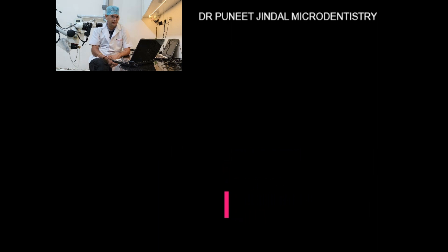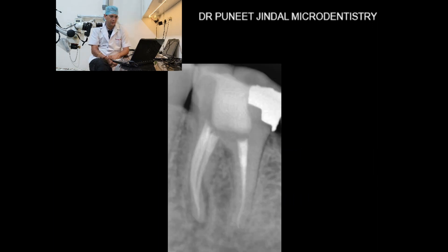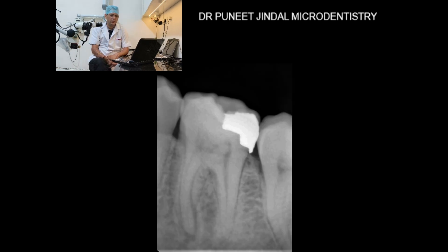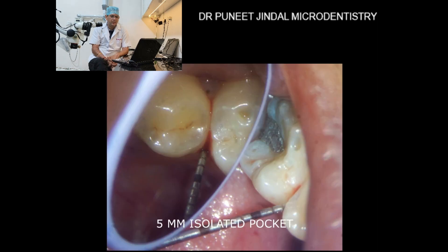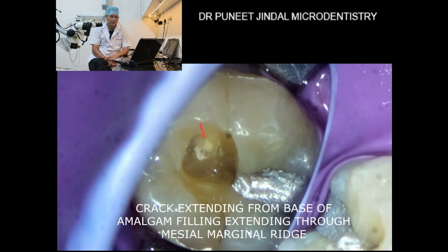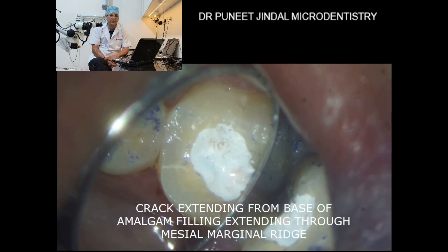This is the final x-ray — you can see the middle mesial canal. This is the preoperative x-ray where you can see the lesion on the mesial root. The initial probing depth is 5 mm alongside the crack. The crack can be seen extending from the base of the amalgam cavity and going through the mesial marginal ridge, exactly to the point where we have seen the pocket.